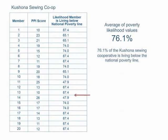What percentage of the Kushona Sewing Cooperative is living below the national poverty line? The sum of poverty likelihood values divided by 20, or the average likelihood value, is 76.1%. So, 76.1% of Kushona members are living below the poverty line.